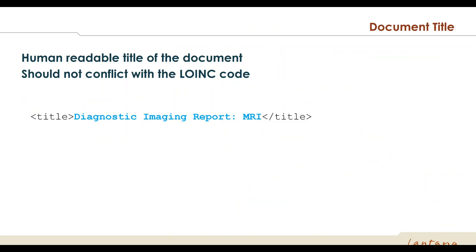Moving on from document type codes, the next field is the document title — the human-readable title for the document. The general rule is it should not conflict with the LOINC code, but may be worded slightly differently than the official display name to account for local practice differences in naming and preferred titles among clinicians and physician groups. It is perfectly legal for the title to not exactly match the LOINC code, but it should not clinically conflict with it in any way. That title is what you actually see when you bring the document up in a web browser.